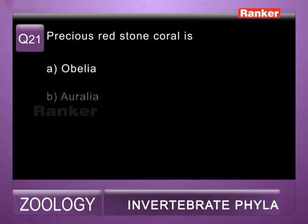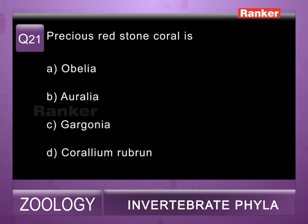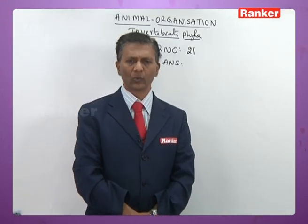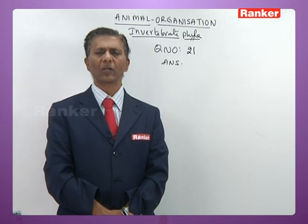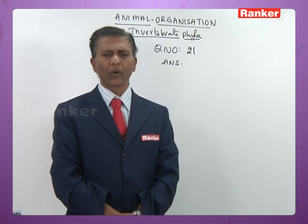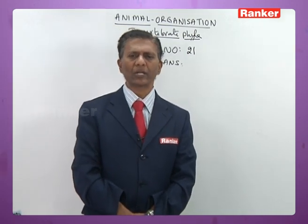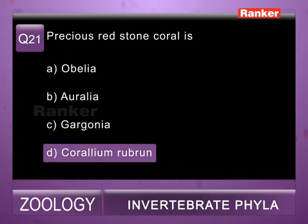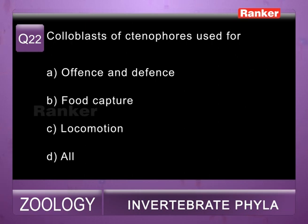Question number twenty-one: precious red stone coral — a) Obelia (sea fur/zoophyte), b) Aurelia (jellyfish), c) Gorgonia (sea fan), d) Corallium rubrum (precious red coral or redstone coral). So twenty-first question correct answer is d.